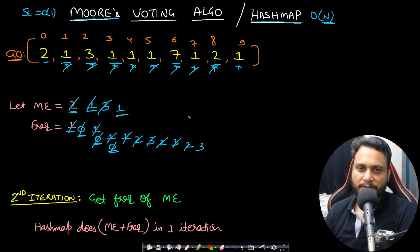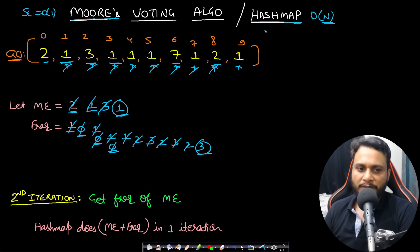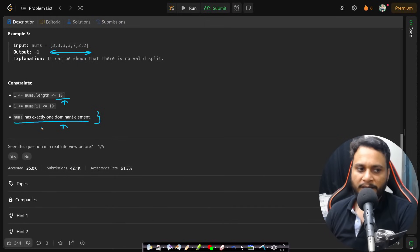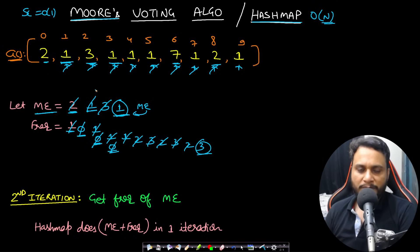This frequency is not an exact indicator of how many times the element has occurred, but if you are guaranteed that the array has a majority element, then after one iteration the final candidate will definitely be the majority element. Since the problem guarantees exactly one dominant element, we know the candidate is correct.